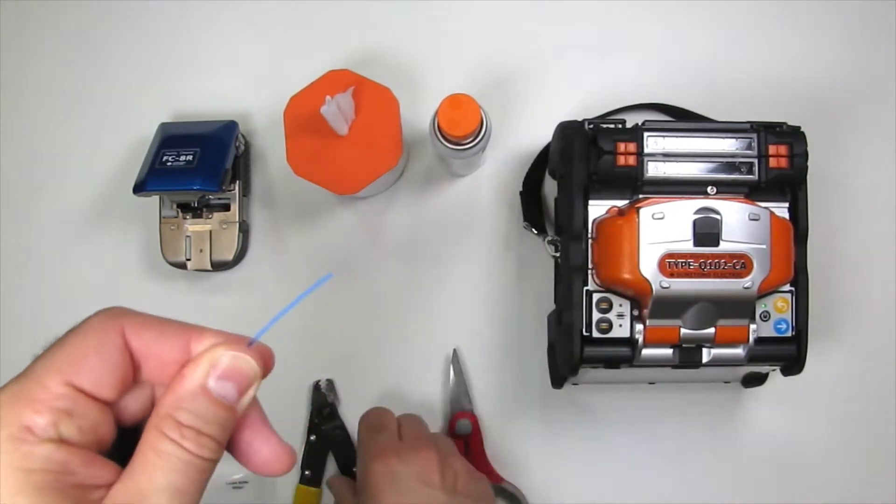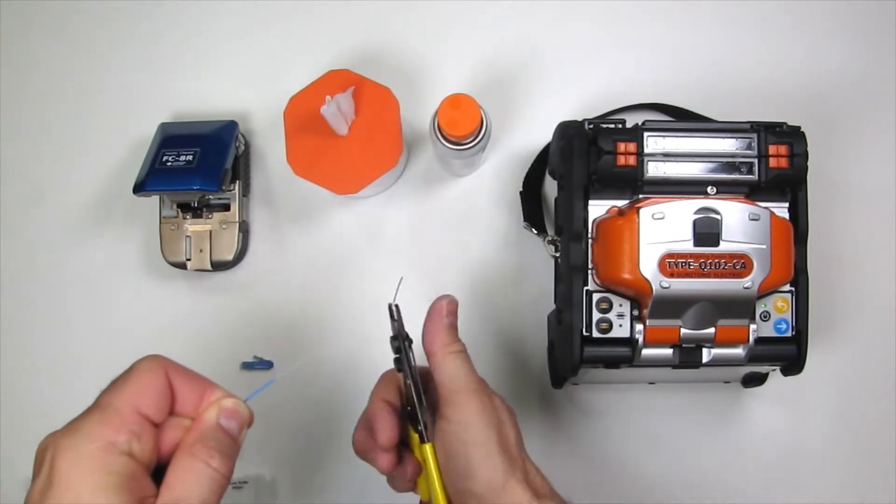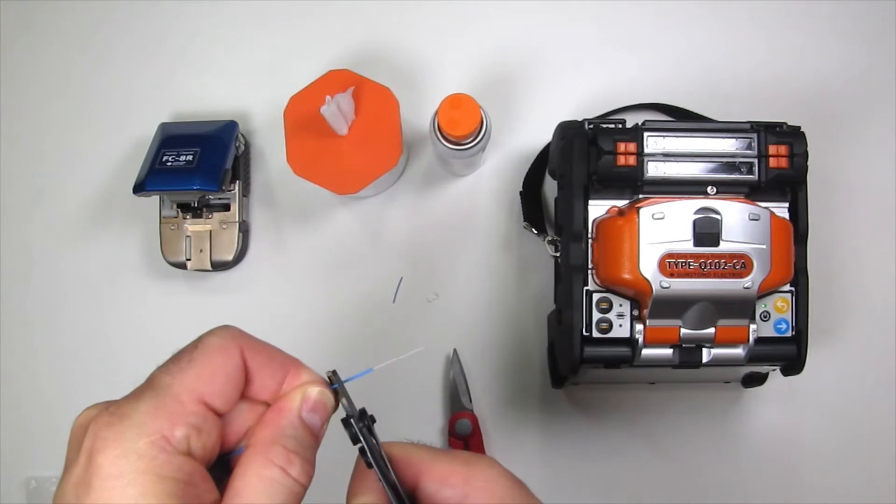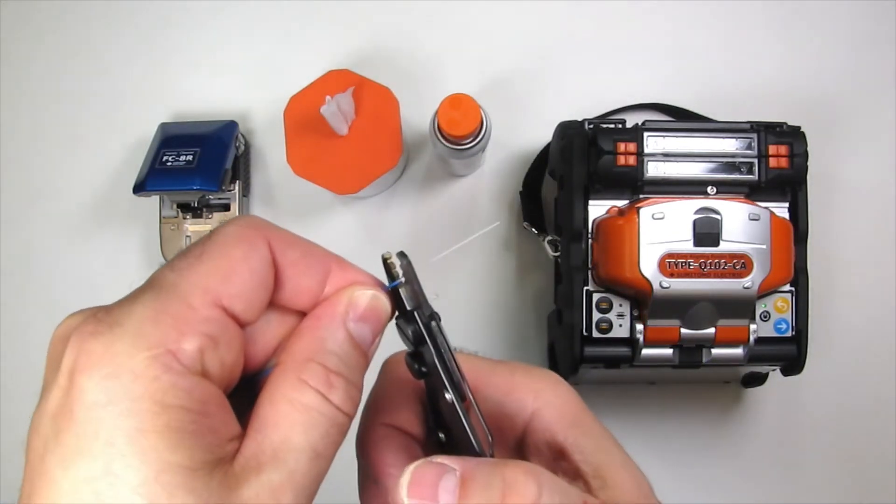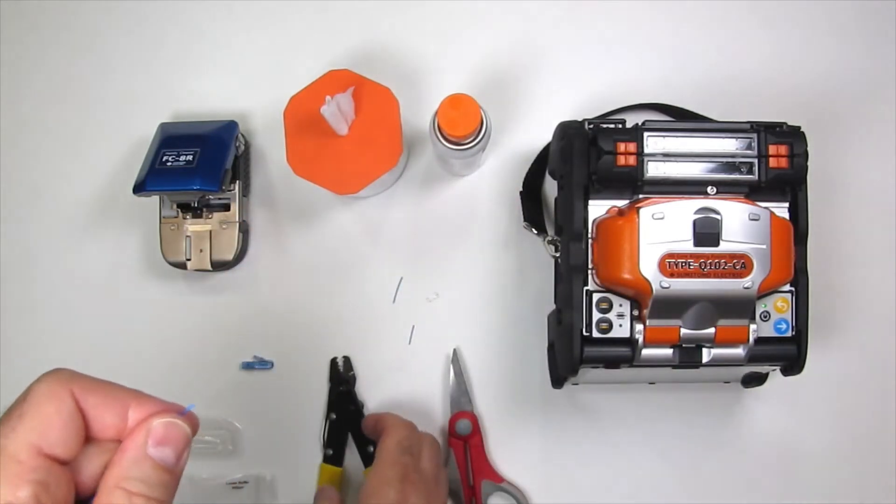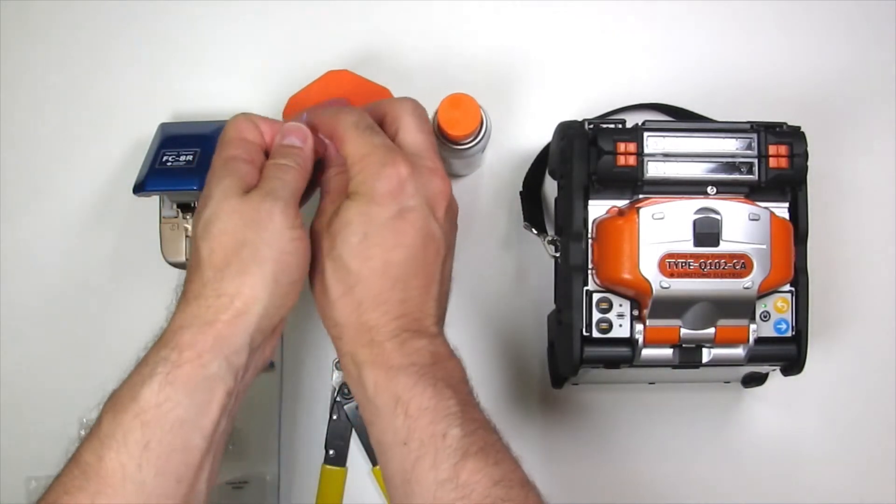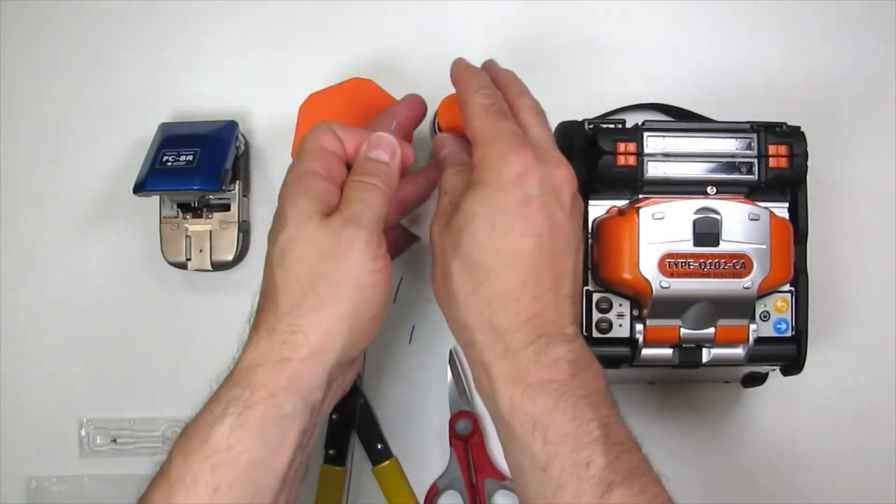Strip approximately 25mm of buffer. Strip the 250 micron primary coating as well.